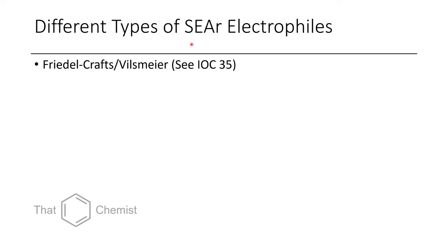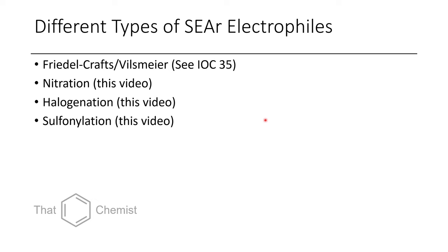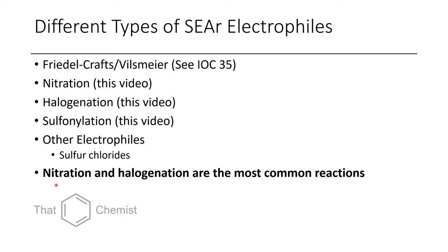There are several different types of electrophilic aromatic substitution reactions. The Friedel-Crafts and Vilsmeier we briefly talked about in the last lecture, and in this video we're going to talk about nitration, halogenation, and sulfonylation. The main two things you're going to see in EAS reactions are nitration and halogenation, because nitroarenes are a very versatile building block, and so are aryl halides. Aryl halides can be used for Grignards, cross-coupling reactions, and you can also lithiate them.